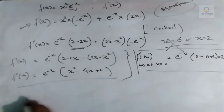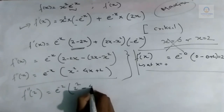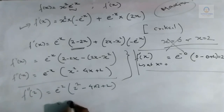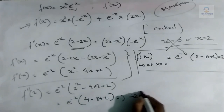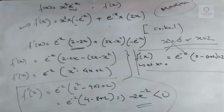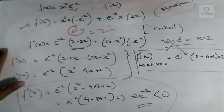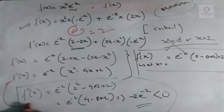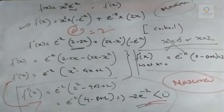Now checking x = 2: f''(2) = e^(-2)(4 - 8 + 2) = e^(-2)(-2) = -2e^(-2), which is less than zero. Therefore x = 2 is a point of maxima. The correct answer is option A, x = 2. Whenever f''(x) < 0 at a critical point, that point is a maximum.